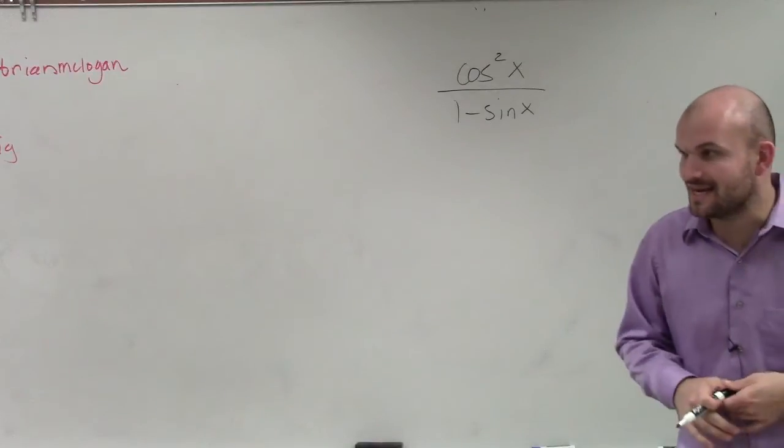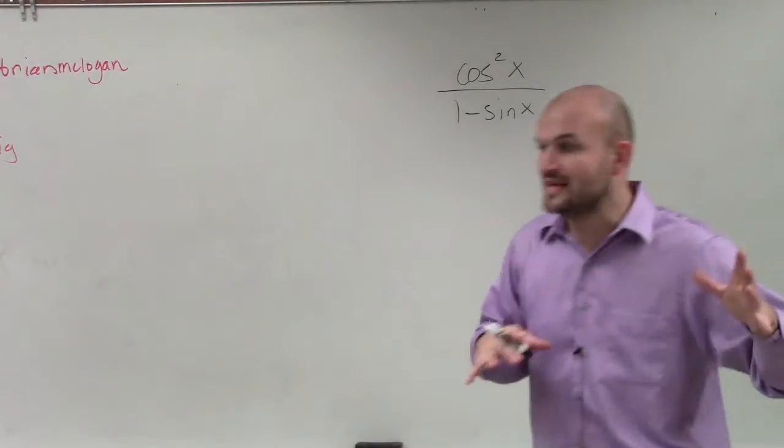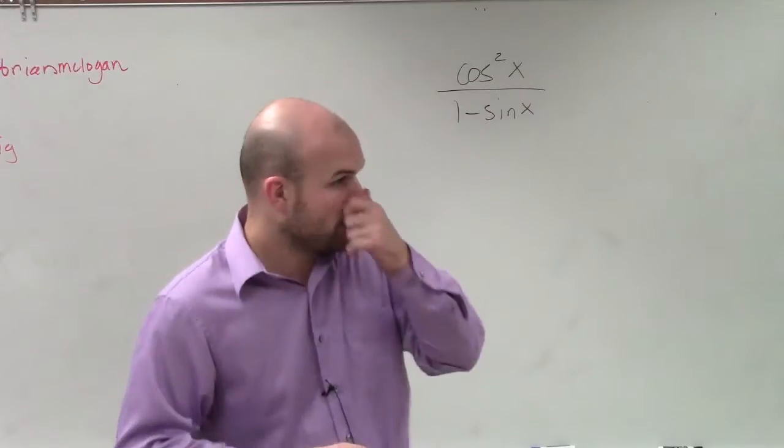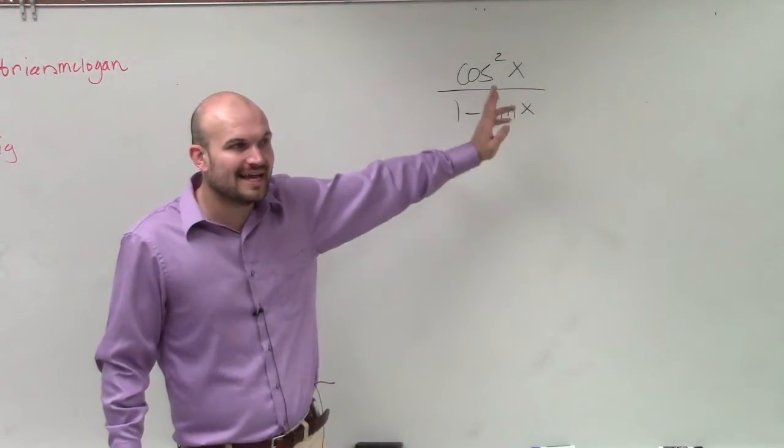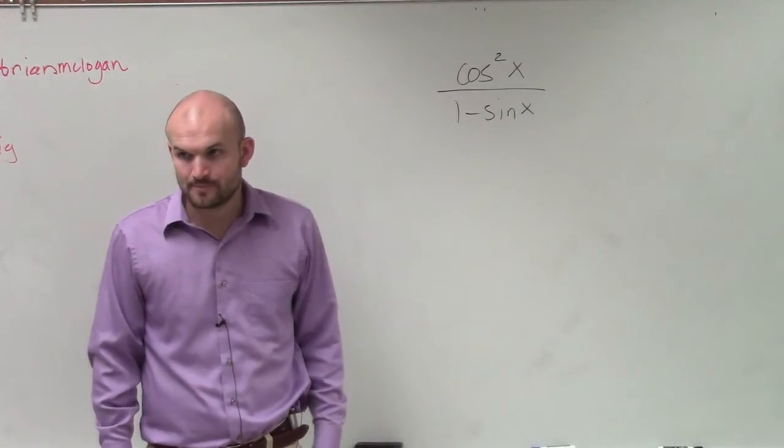One of the big mistakes a lot of students make is to look at this and say, oh, that 1 minus sine, that's equal to cosine squared, right? Or cosine. Remember, those Pythagorean identities only work when we have a sine squared or a cosine squared.